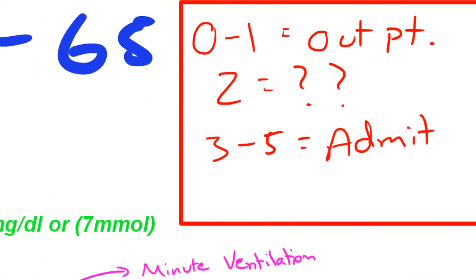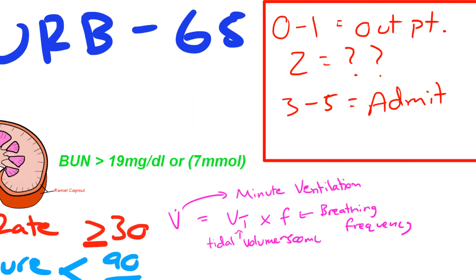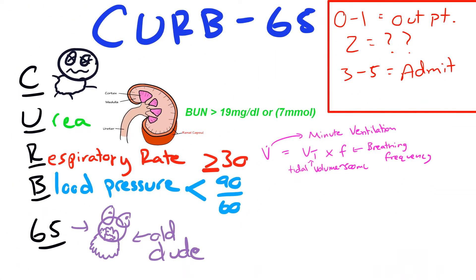So a score of zero to one, you can treat outpatient. If it's three to five, then you definitely want to admit them to the hospital. And this will usually be the immunocompromised, the diabetics, the COPDs, or even the alcoholic patients and so on. A score of two, that's usually in the gray zone. So you have to really determine whether or not you want to admit them or not. So that's really up to you.